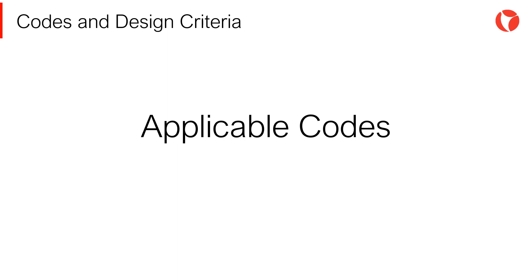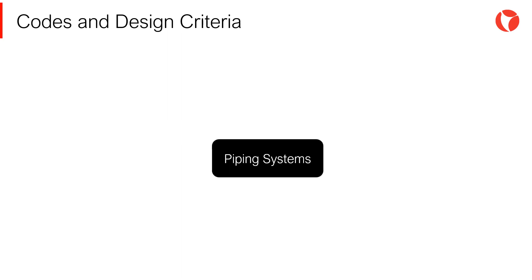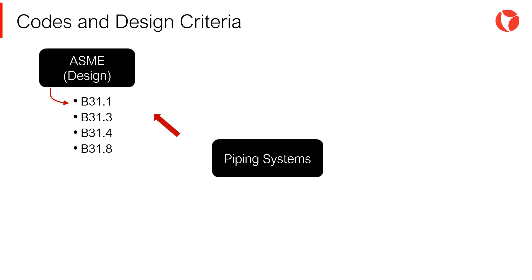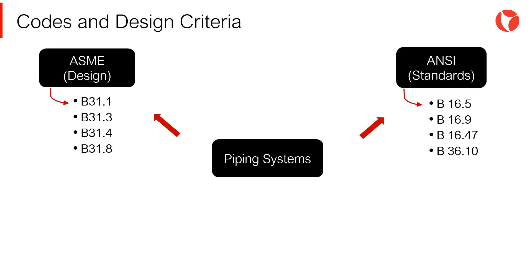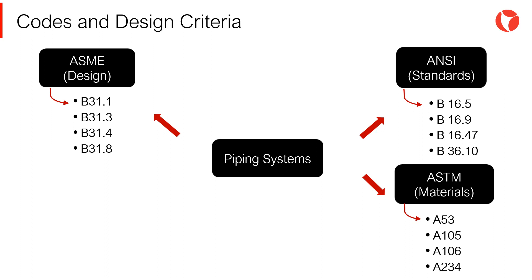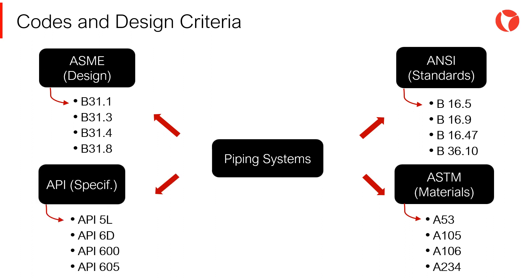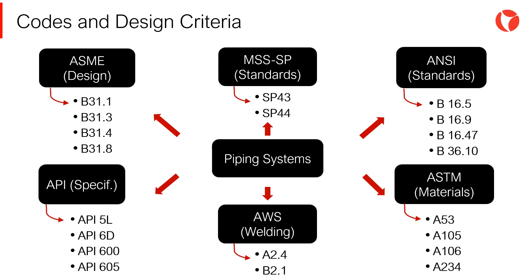There are several codes and standards that must be used when designing a piping system. These include calculation and design codes such as those in the different sections of the ASME B31; standards such as the ANSI standards; material specifications from ASTM; API specifications; other standards such as the MSS SP; and welding codes such as the American Welding Society, AWS.